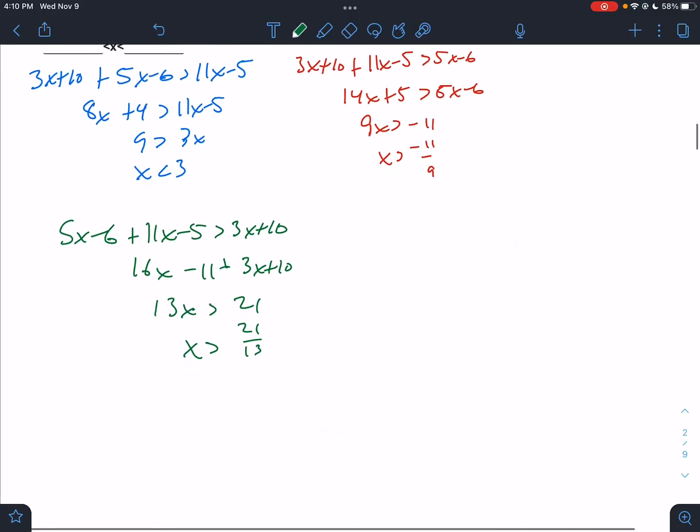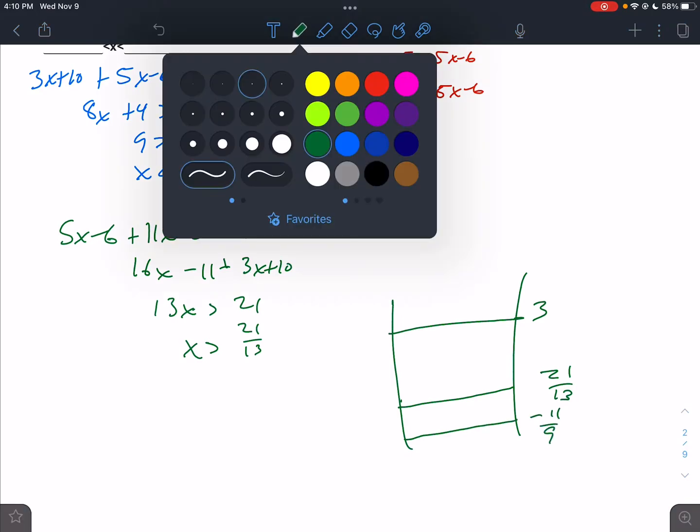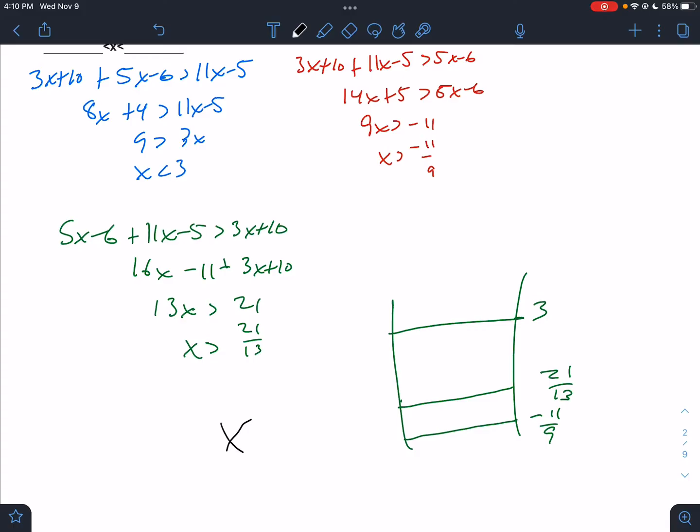Let's think about what I was doing earlier. If I had these bars, so we have a bar at 3, we have a bar at 21 over 13, and we have a bar at negative 11 ninths. And I have to be here, here I am X, I have to be bigger than the two low ones but less than 3.